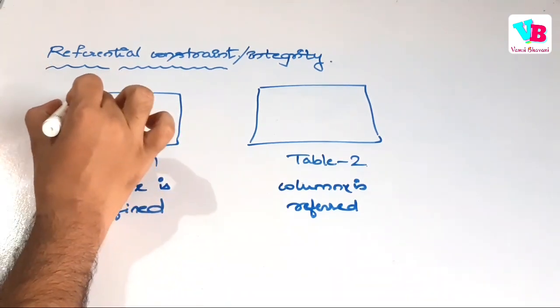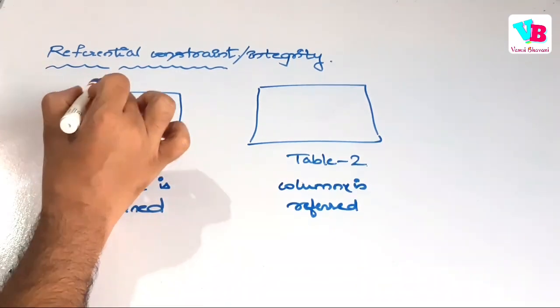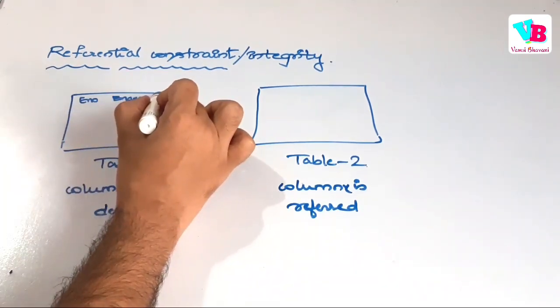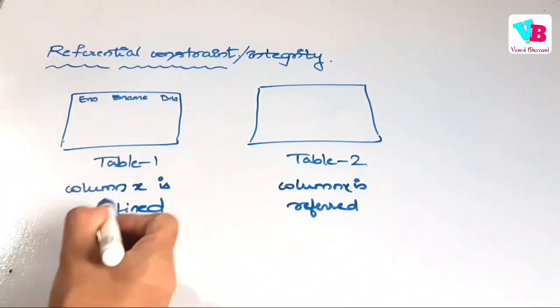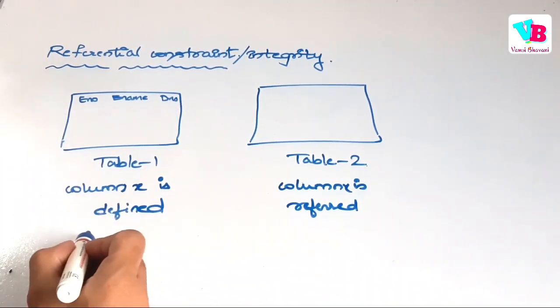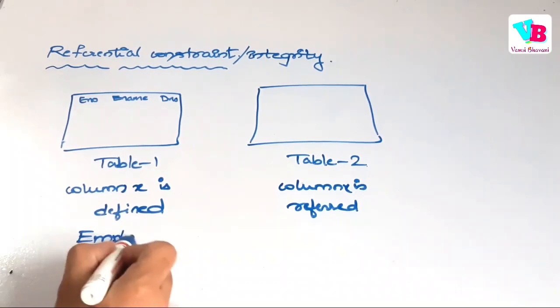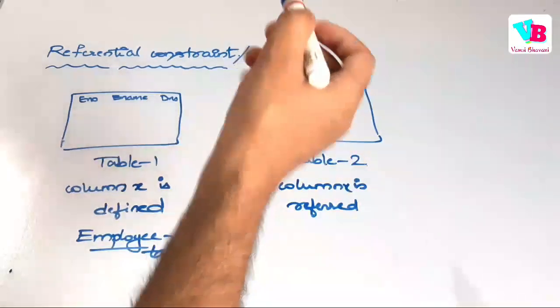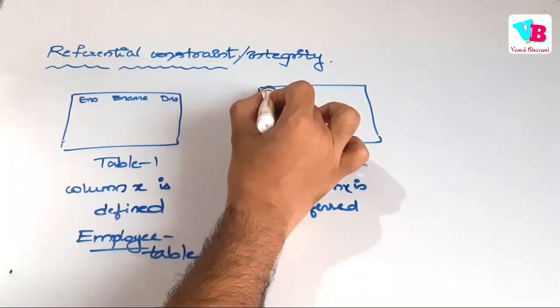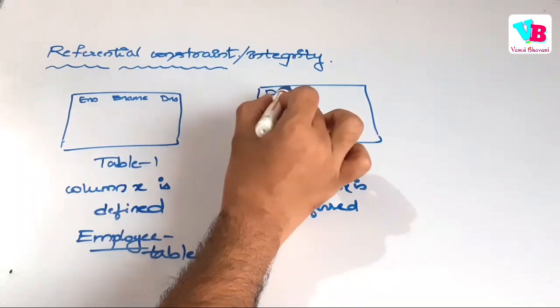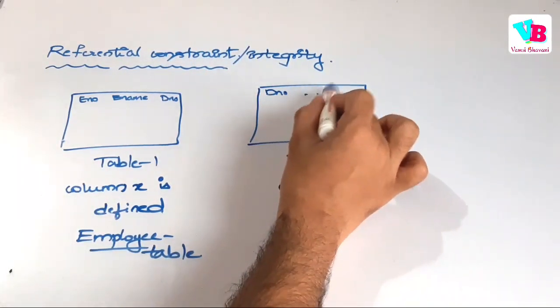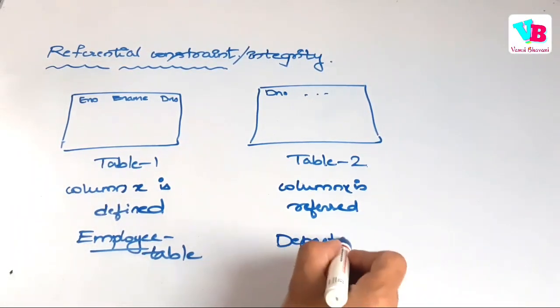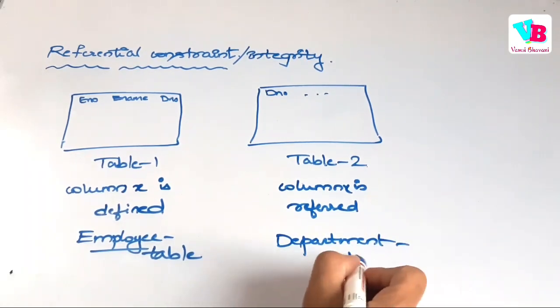Let's say we have something called employee number, employee name, and employee department number. So, we can call it as employee table. Very simple. And let's say in this table, we have a department number. Basically, we have other fields also, but fine. And let's say this is the department table.